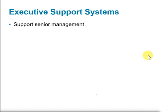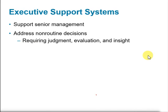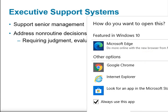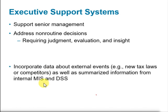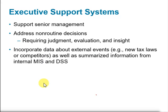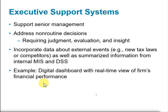The last category is the executive support system, which supports senior-level management. Senior managers are usually engaged in making strategic business decisions that are long-term in nature, dealing with the vision and mission of the organization. These are non-routine decisions requiring judgment, evaluation, and insight drawn from experience. Executive support systems also incorporate data about external events, which informs the executive's decision making.